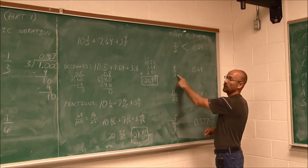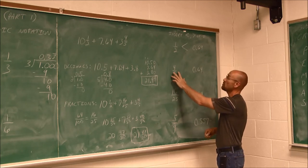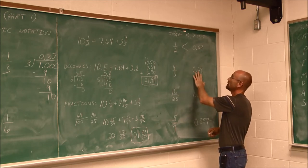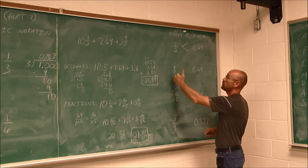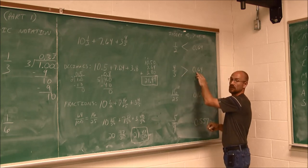4 fifths, we already converted that to a decimal. We found it to be 0.8. 0.8 is greater than 0.64. So 4 fifths is more than or greater than 64 one hundredths.